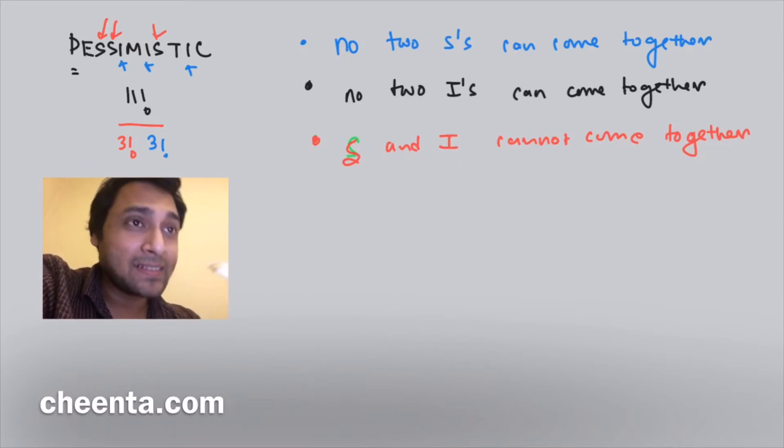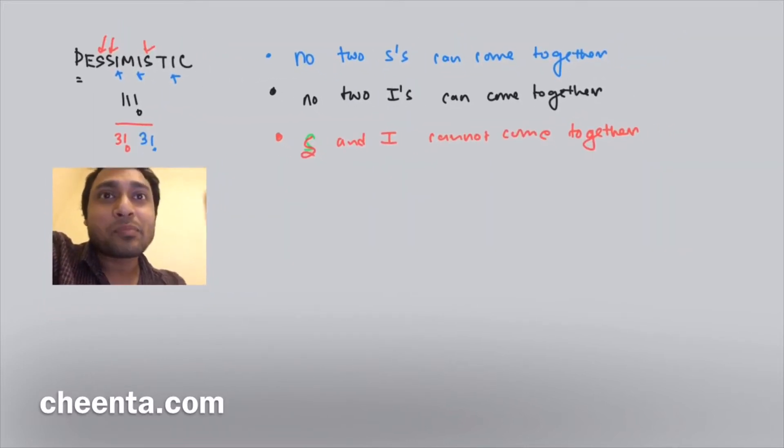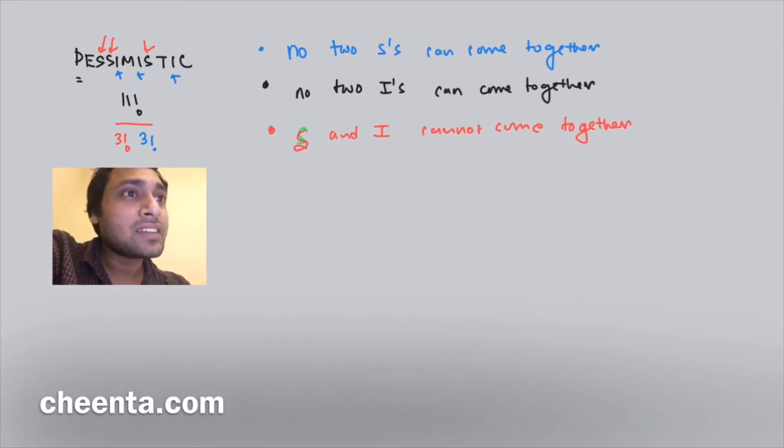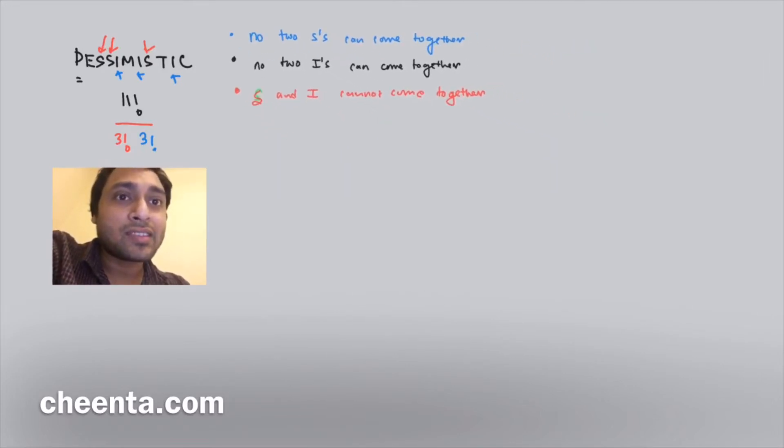The trick is this: you should worry about the remaining letters. So what are the remaining letters? The remaining letters are P, E, M, T, C - the five letters. These are the remaining five letters in the word pessimistic.